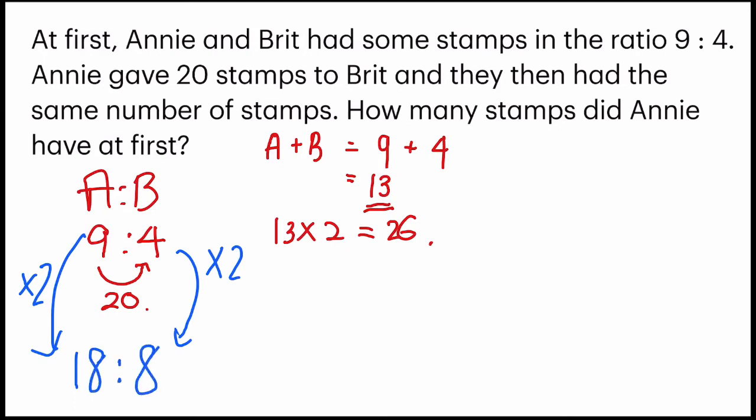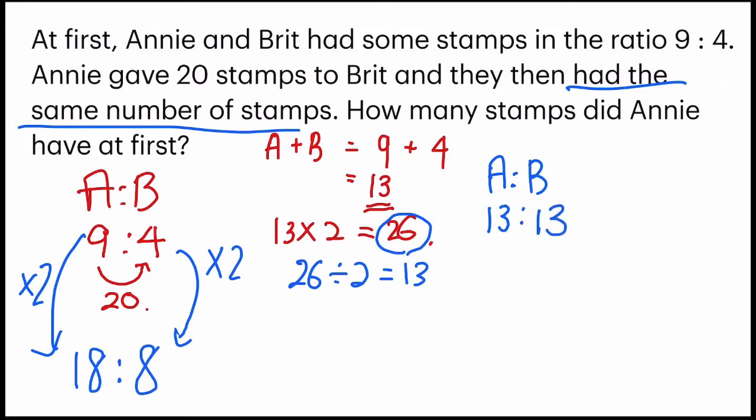And then after, they said they had the same number of stamps, which means the unit would be equal. And there are a total of 26 units now. So 26 divided by 2, I get 13. So Annie would have 13 units. Brit would also have 13 units.